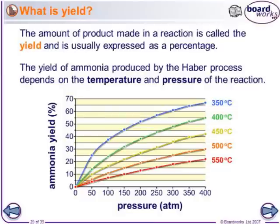The amount of product made in a reaction is sometimes called the yield and is usually expressed as a percentage. The yield of ammonia made in the Haber process depends on two things: temperature and pressure. This goes back to collision theory — talking about particles colliding together — so the yield depends on the temperature and pressure used when carrying out the reaction.